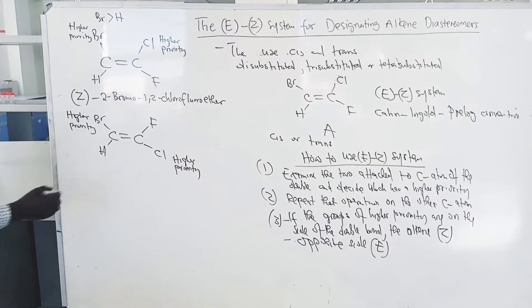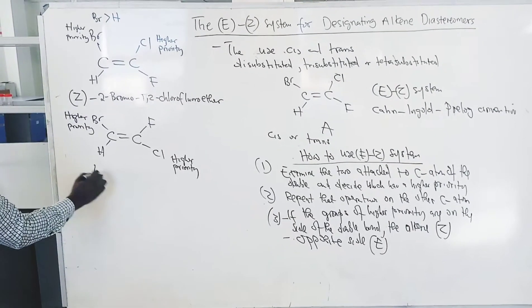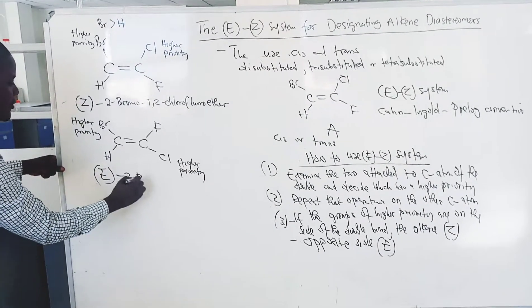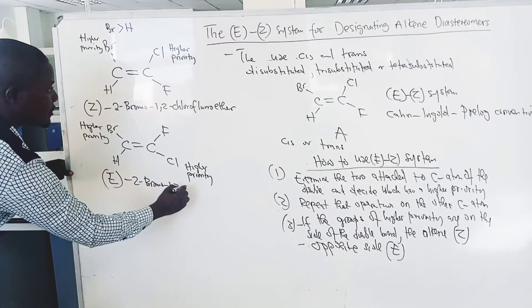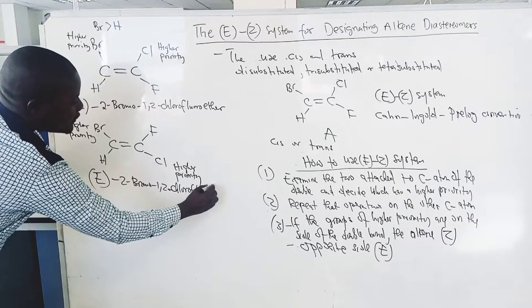The groups of higher priority in this case are on the opposite side. So, this alkene is designated E. So, this alkene is named E-2-bromo-1,2-chloroethene.